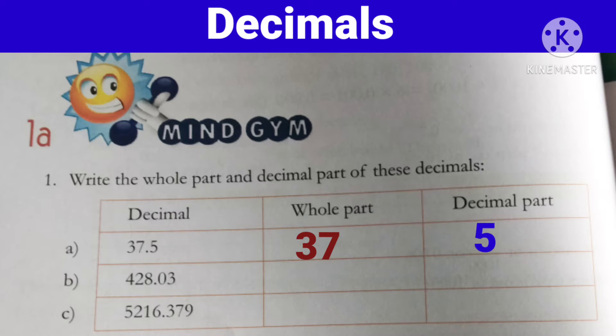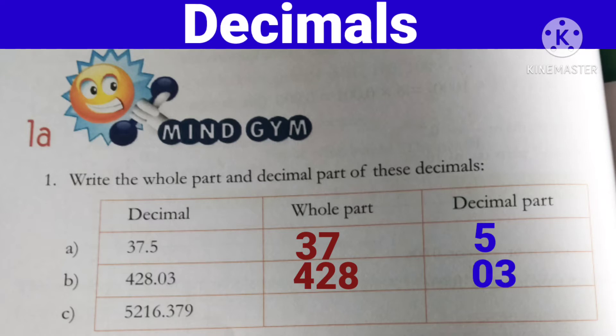Next, b) 428.03. Maine abhi bataya tha ki fractional part ko hum ek-ek digit ko read karte hai. 428.03 — toh isme whole part hoga 428, aur 03 hoga decimal part.